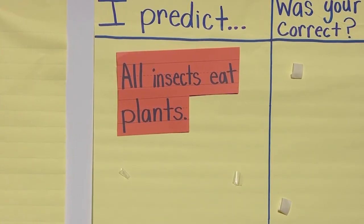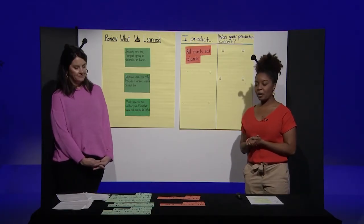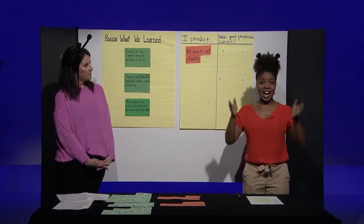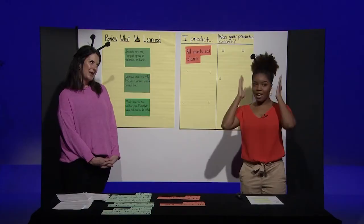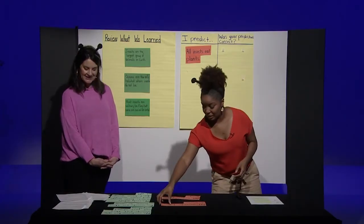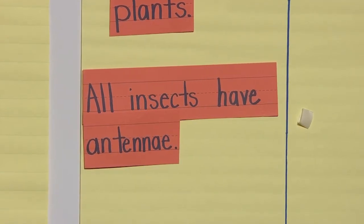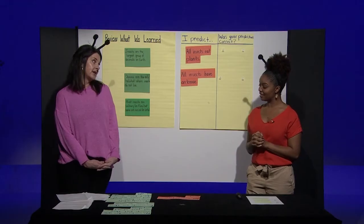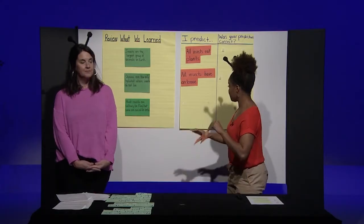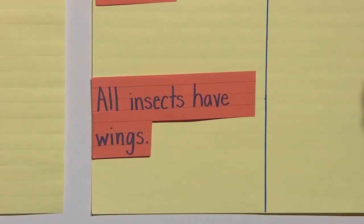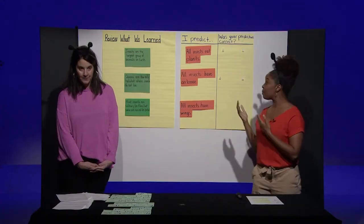Ms. Allison, can you give us another prediction? I think that all insects have antennae. That's a great prediction. All insects have antennae. Ms. Allison, I have antennae — am I an insect? No, Ms. LaTondra, you're not an insect. I guess my antennae aren't real. So I will put this under our other prediction. Can you tell us one more prediction? I'm pretty sure that all insects have wings. That's a really great prediction. Let's add that to our chart.